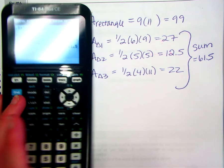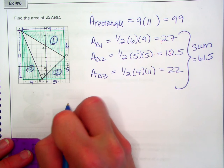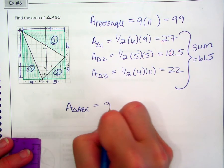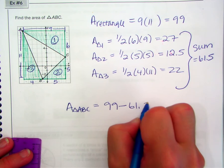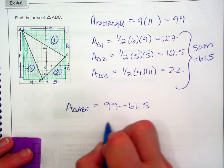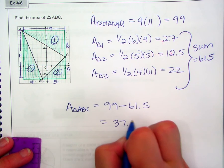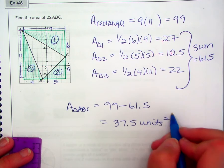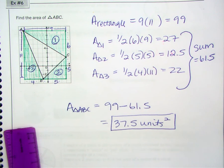So the area of triangle ABC equals 99 minus 61 and a half. So the area is 37 and a half units squared. And that is it for today.